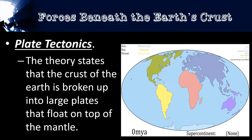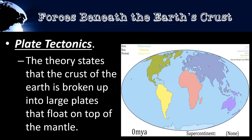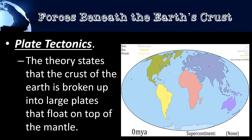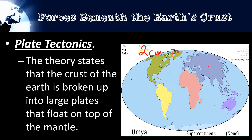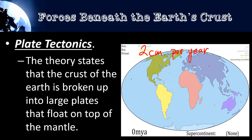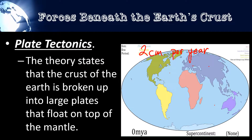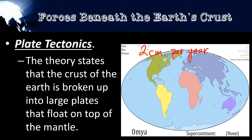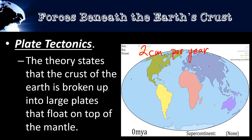When I say millions of years, that's because the average movement of the Earth's tectonic plates is about two centimeters per year. So this is a very slow process, but a very powerful process that has shaped the face of our planet.